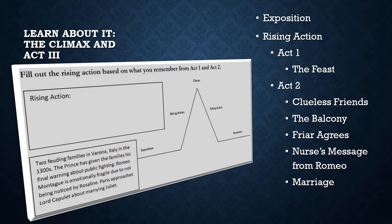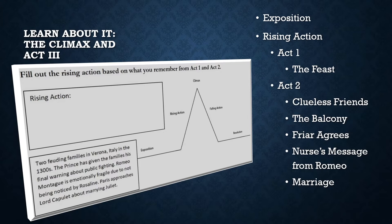In the exposition, these facts are true: two feuding families in Verona, Italy in the 1300s; the prince has given the families his final warning about public fighting; Romeo Montague is emotionally fragile due to not being noticed by Rosaline; and Paris approaches Lord Capulet about marrying Juliet. By the end of Act 1 and during Act 2, Shakespeare builds tension through six events. First, the feast — Tybalt notices Romeo at the party, but Capulet encourages Tybalt not to make a mutiny. Romeo sees Juliet and forgets all about Rosaline. Romeo and Juliet meet, and then they kiss.